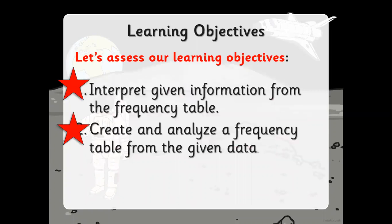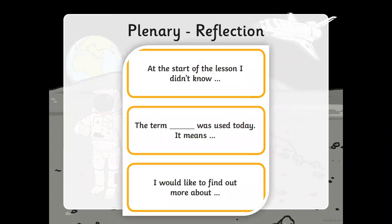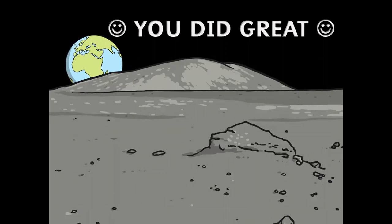We will now assess our learning objectives again — we have covered both nicely. We have created and analyzed a frequency table from given data. By the end of this lesson, think of something you learned today, like the term 'frequency table,' and explain it in your own words to a parent. If you want to find out more, write me an email or ask when you come to school. I hope you enjoyed making frequency tables and interpreting information. See you soon — take care, bye!